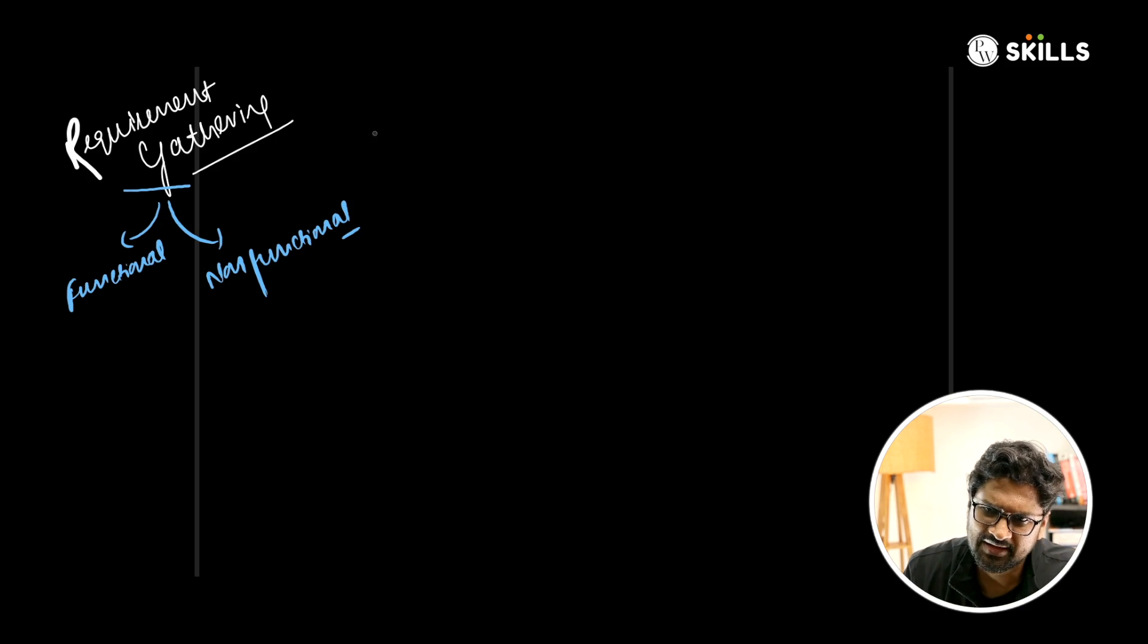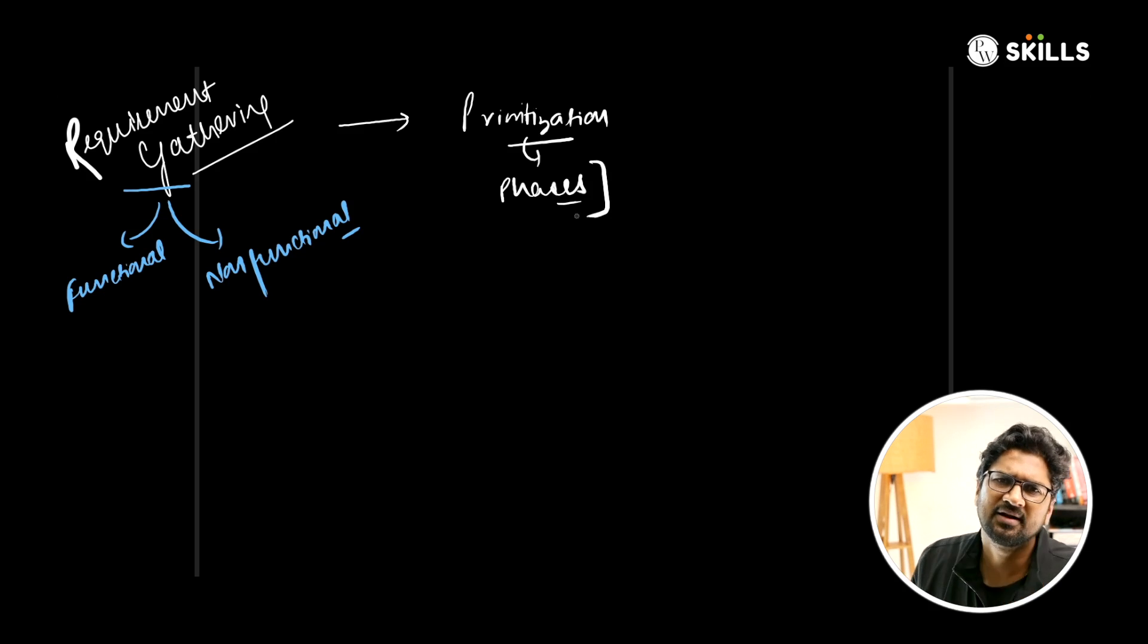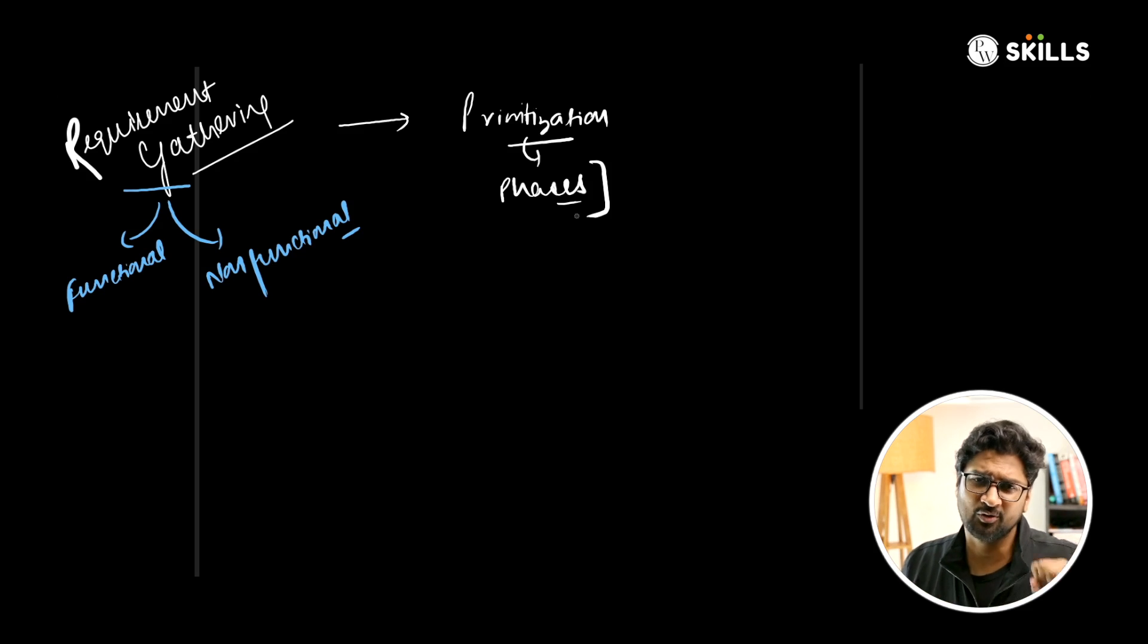Once you've done requirement gathering, the next step is prioritization and phasing. Rome was not built in a day; it took years. Similarly, when you have a big project, you can't do it all together at the same time. You break the entire requirement into different phases - what is phase one, phase two - depending on criticality. You decide which features to bring first, the initial MVP or features you want to do.